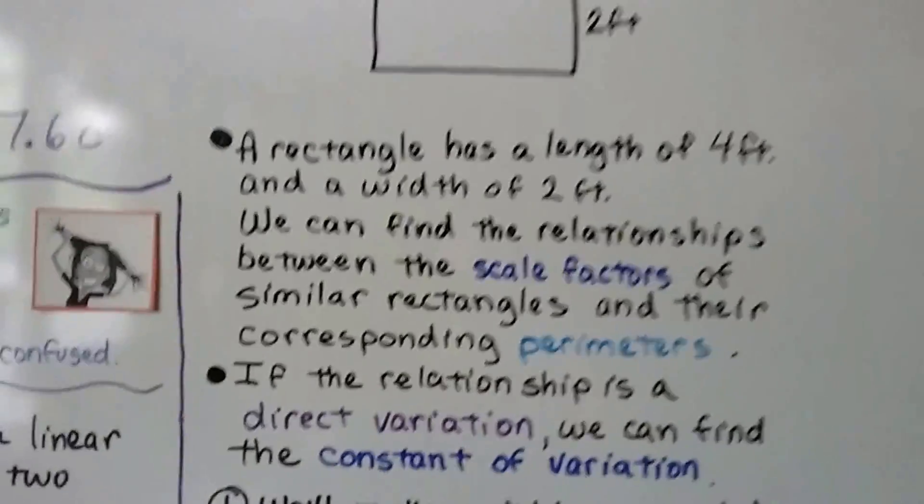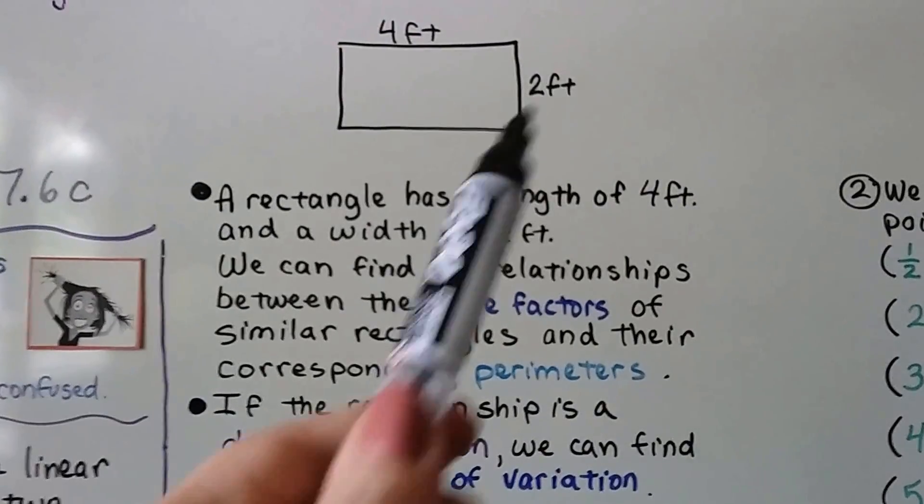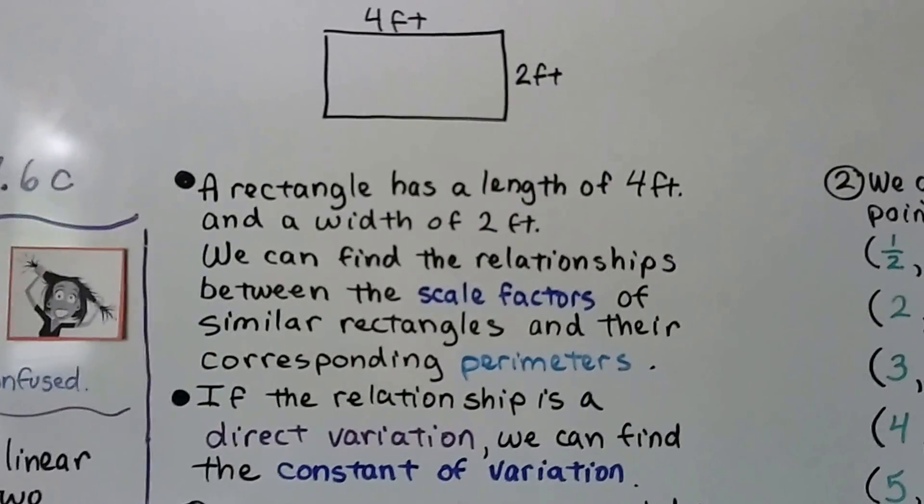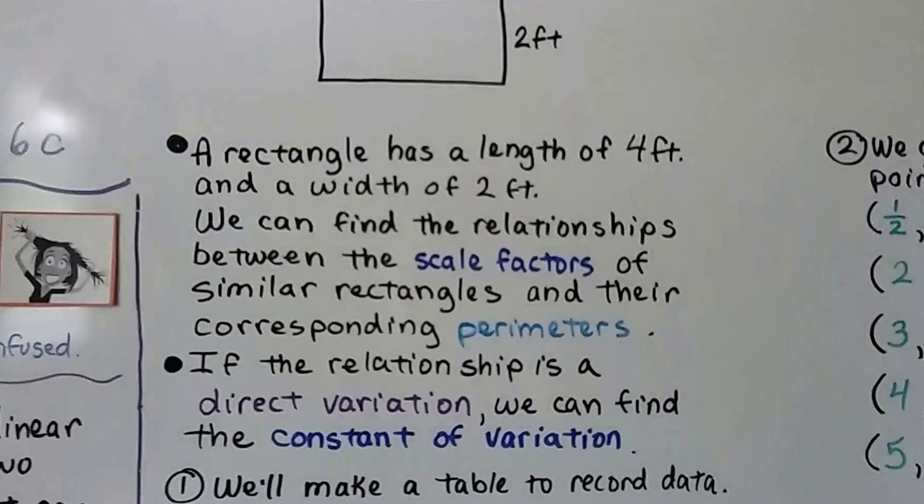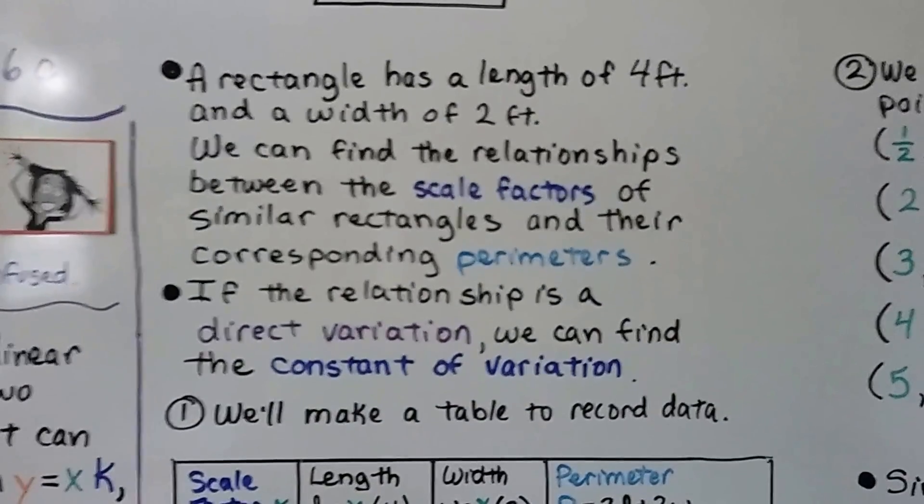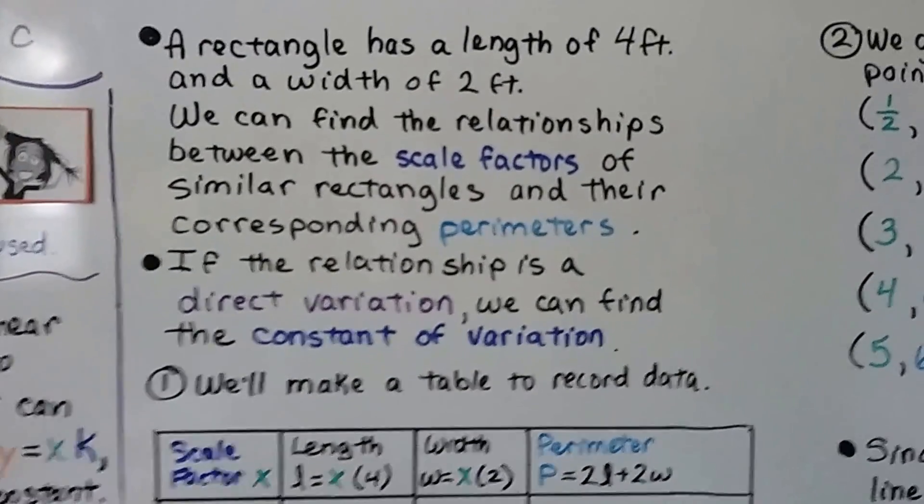So a rectangle has a length of 4 feet and a width of 2 feet. We can find the relationships between the scale factors of the similar rectangles and the corresponding perimeters. If the relationship is a direct variation, we can find the constant of variation.